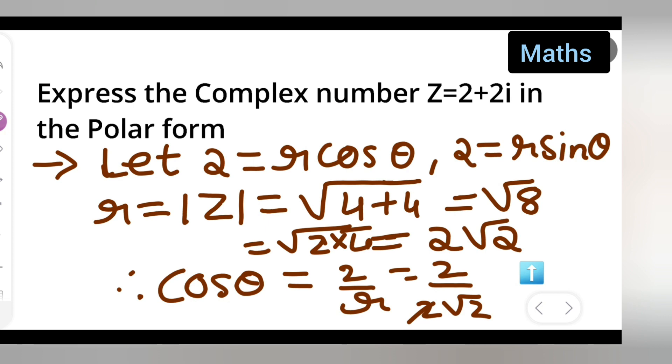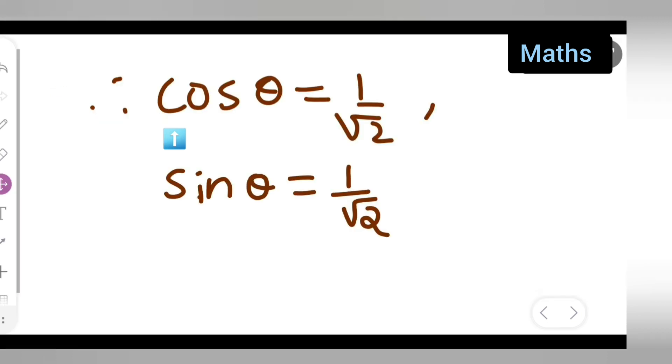Here 2 and 2 will get cancelled, you are left with 1 upon root 2. So basically cos theta equals 1 upon root 2, sin theta is equal to 1 upon root 2. So similarly we will get this.